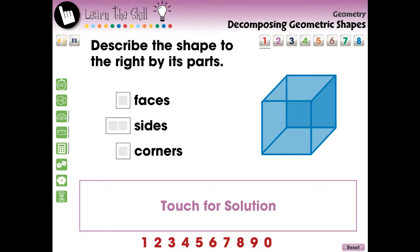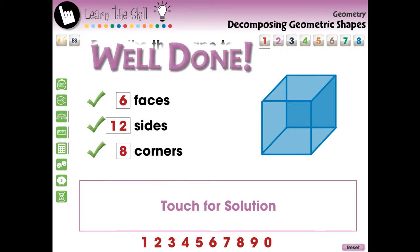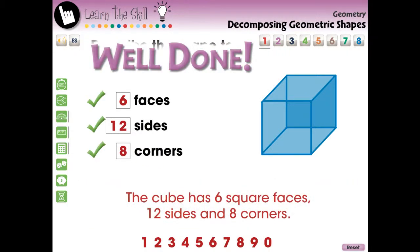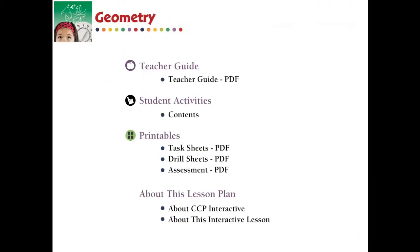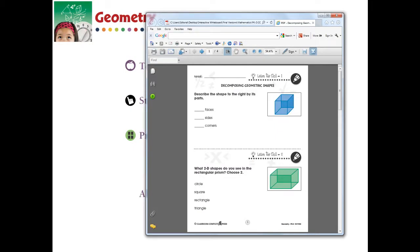The Learn the Skill section contains eight screen pages of real-world task problems. These questions include a touch-for-solution option to give a step-by-step of how the answer is reached. These questions are delivered in the form of fill-in-the-blank and touch questions. Printable PDF versions of the task questions are available at the menu screen.